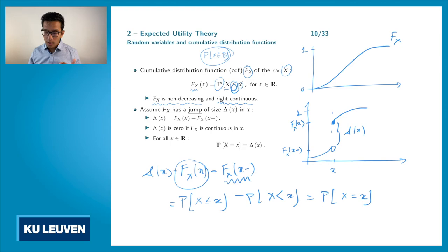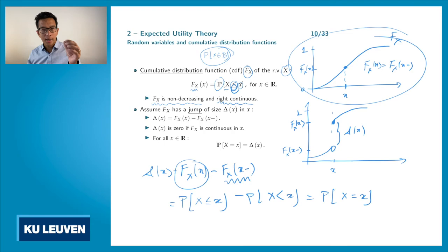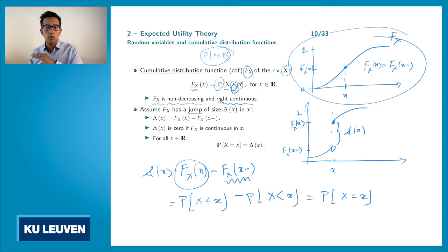So if we have a distribution function that is continuous at x, then F_X(x) equals F_X(x⁻), meaning the probability that the random variable X is exactly equal to x is zero. For a continuous distribution function, you always have that the probability that X takes a specific value is zero. If you have a discrete distribution function that makes a jump, then we have a probability mass at a certain value.